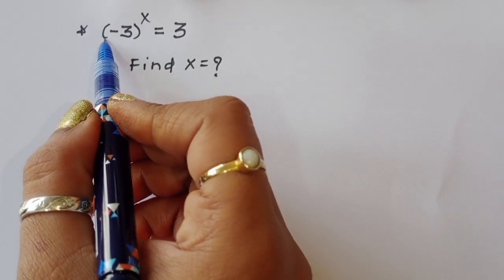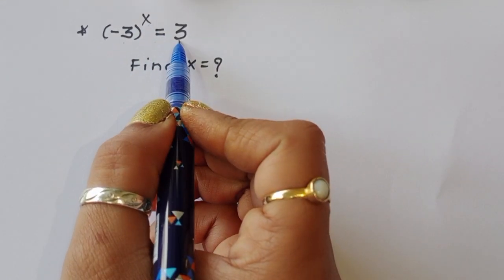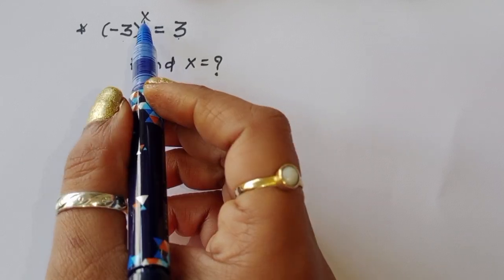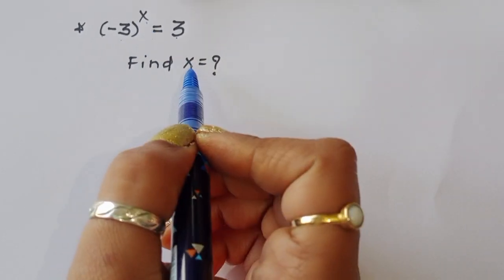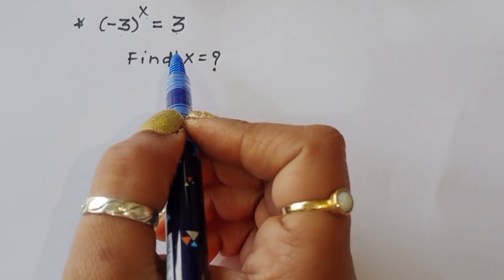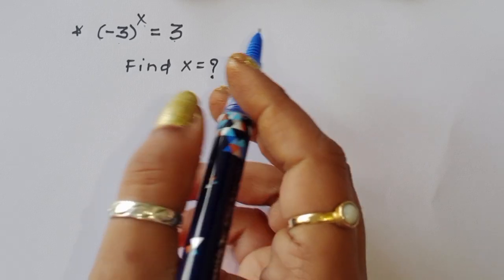The question is: minus 3 to the power x is equal to 3. We have to find out the value of x. Let's see the solution.